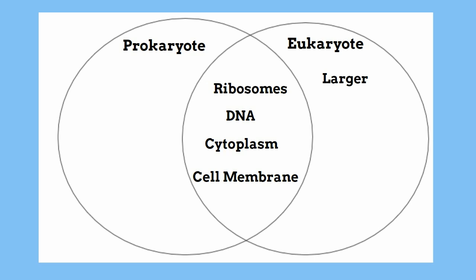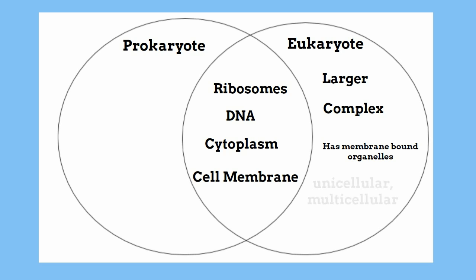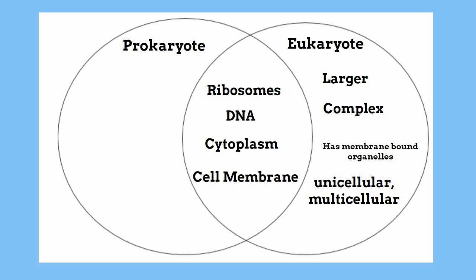Eukaryotes are larger, more complex, contain membrane-bound organelles, and can be either single or multicellular organisms. Prokaryotes are small, do not contain a nucleus, do not have membrane-bound organelles, and are all single-celled organisms.